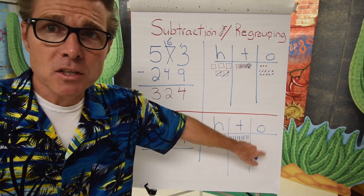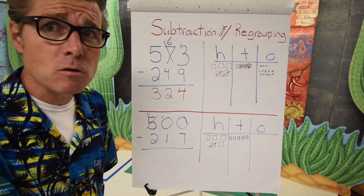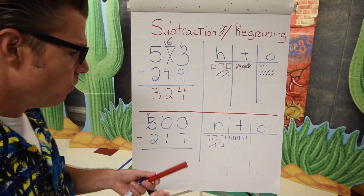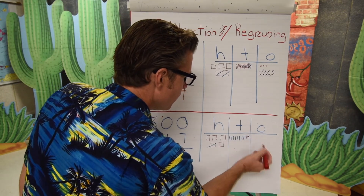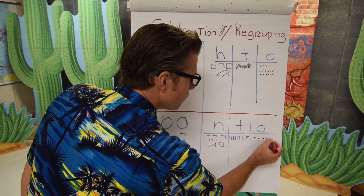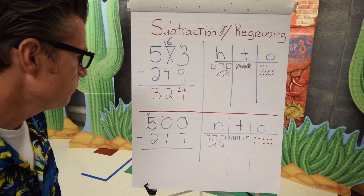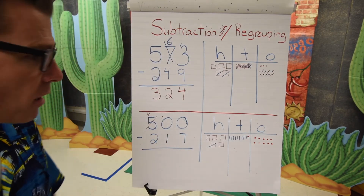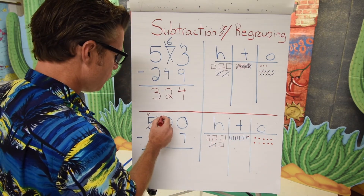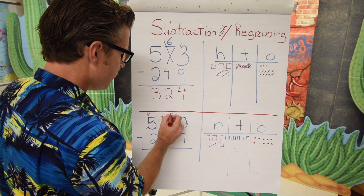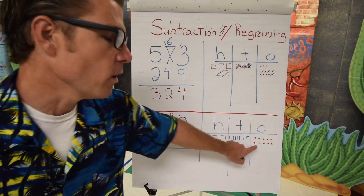Now let's visit our tens spot. Since we have ten tens, we can break one of those tens into ten ones. I mark through one ten and count out ten ones. That leaves us with nine tens. So borrowing from the tens turned that value into nine, and we're able to add ten into the ones spot. Now every place has some value to it.